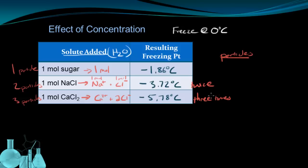If we looked at the boiling point changes for these, we would see the same pattern. That the NaCl would have twice the effect of the sugar and the calcium chloride having 3 times the effect of the sugar.